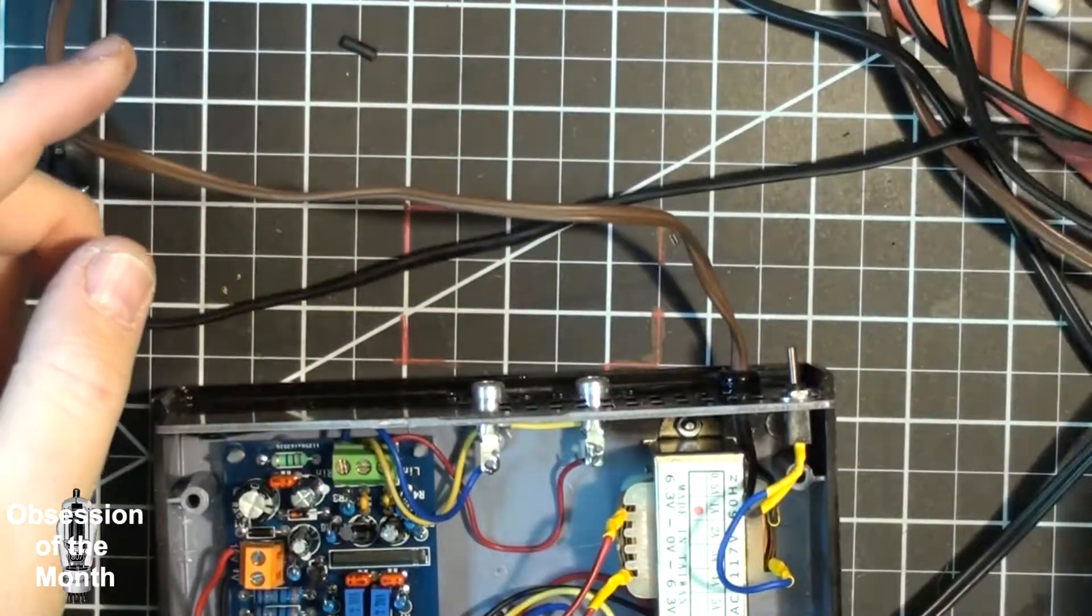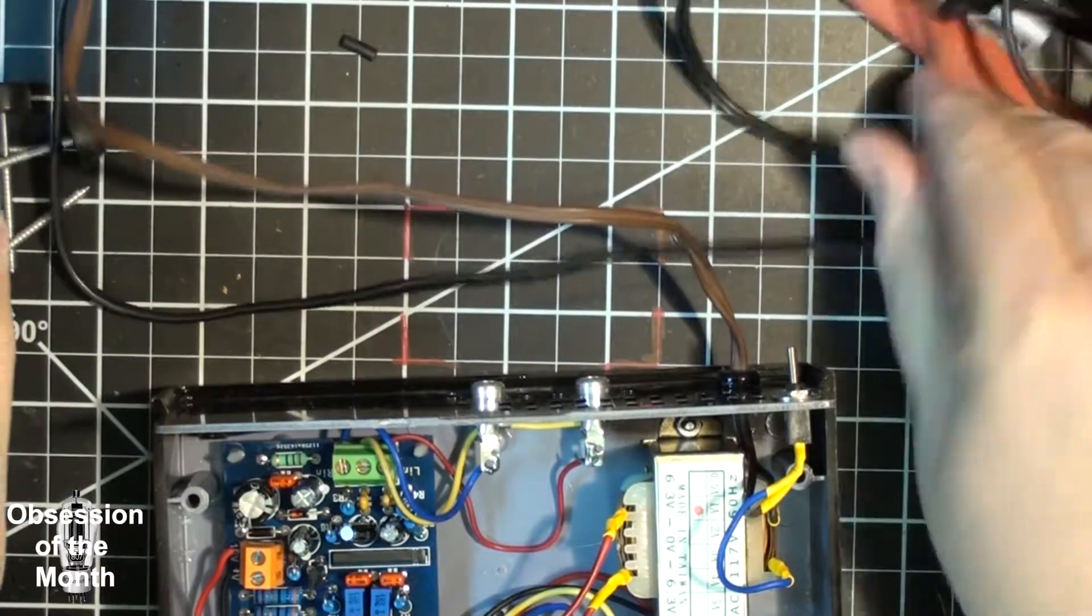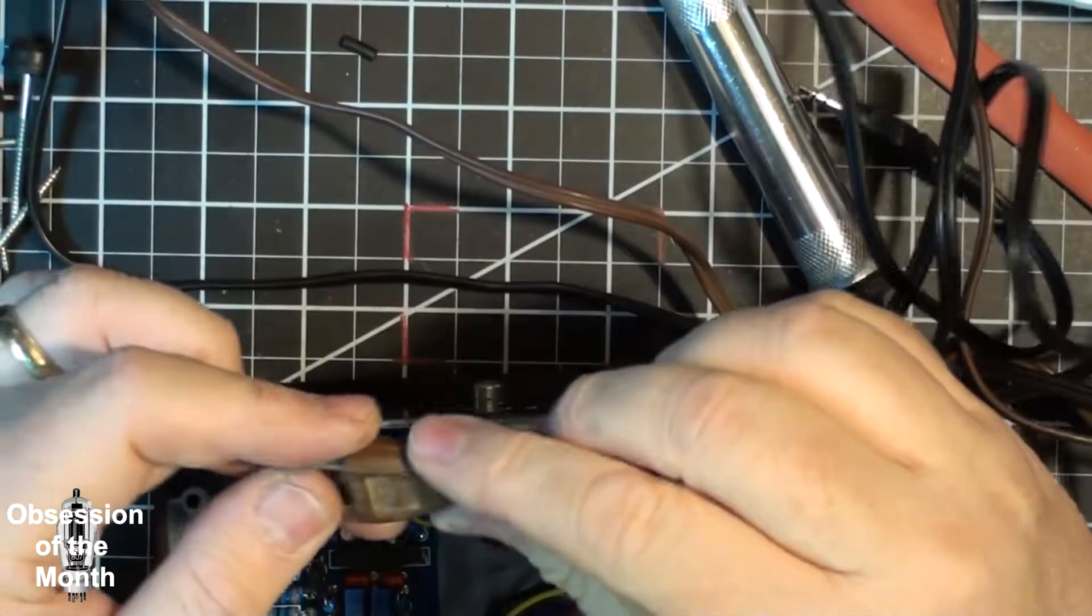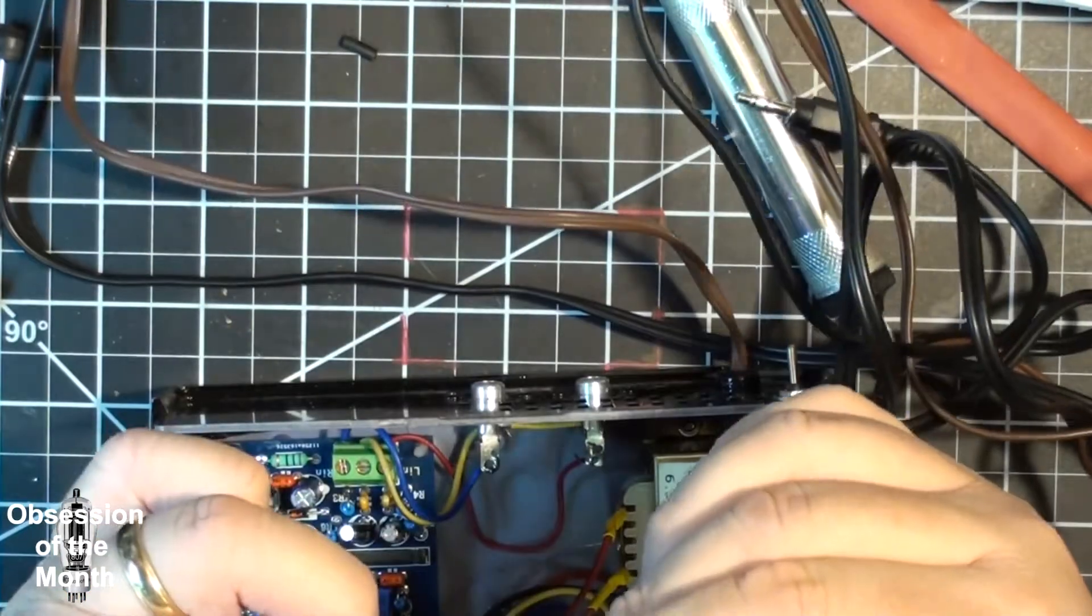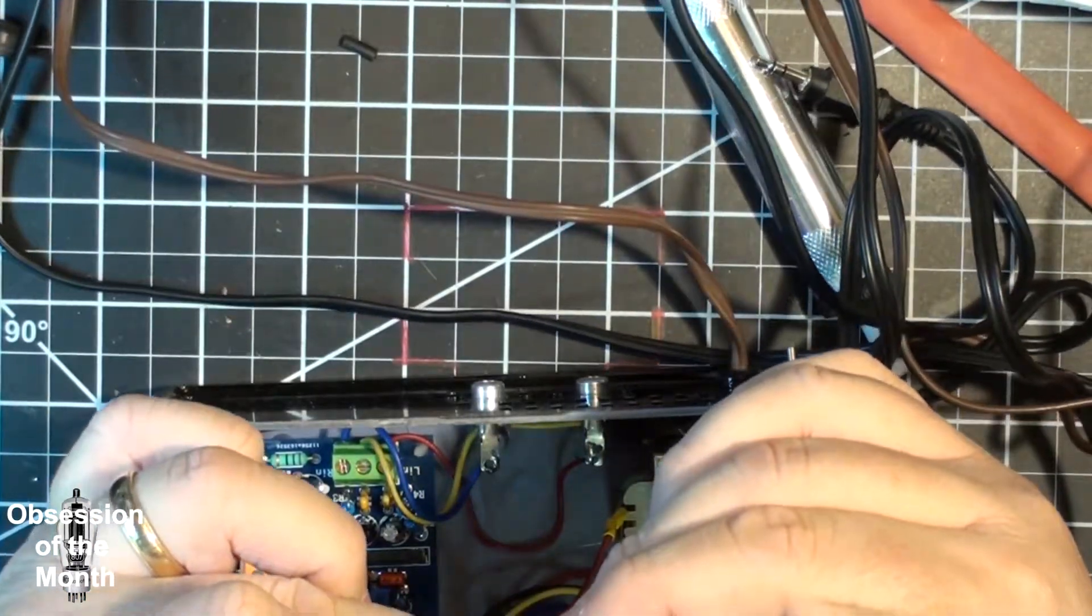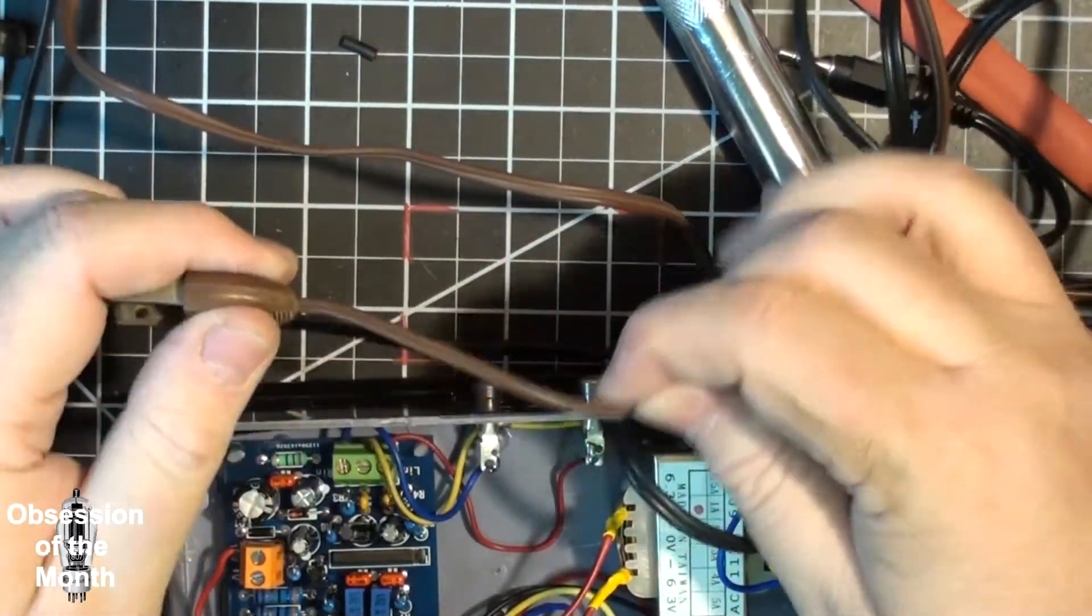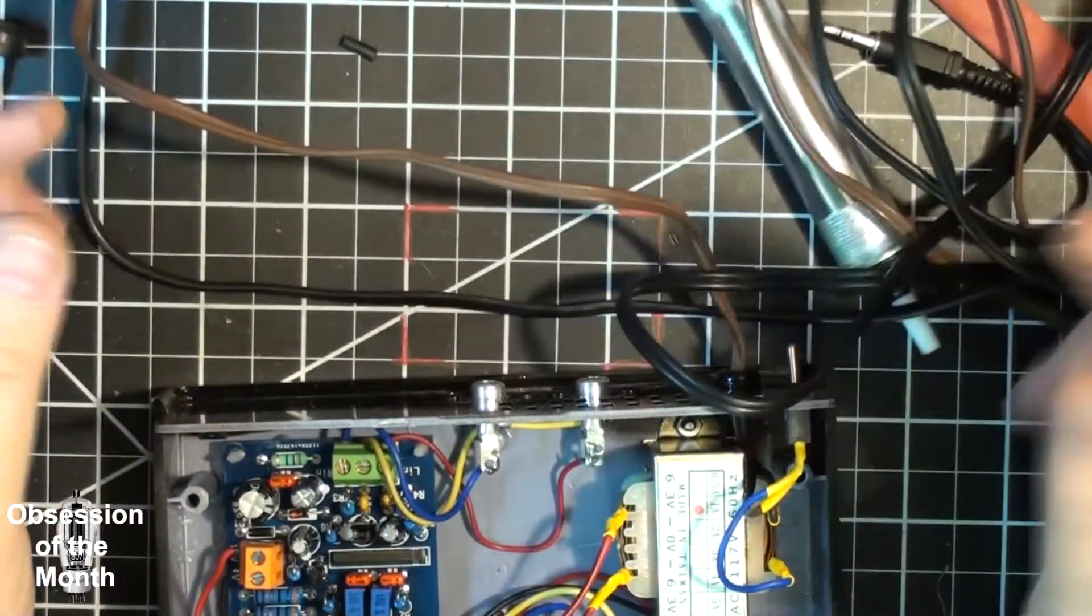The plug has a rating on it that unfortunately is partially removed and it either says 6 amps or 5 amps. I'm not really sure, I'm going to go with 5 because this is such thin wire. I highly doubt that it could do 6 amps.